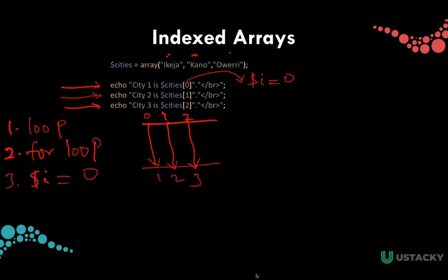So this is the starting point. Our condition is $i is less than three because we have three loops, which is also the number of elements in the array — one, two, three — and also our increment is one. So with this information, we can write a for loop.